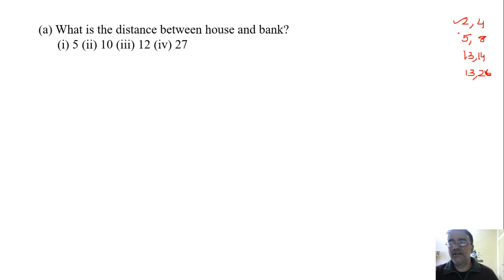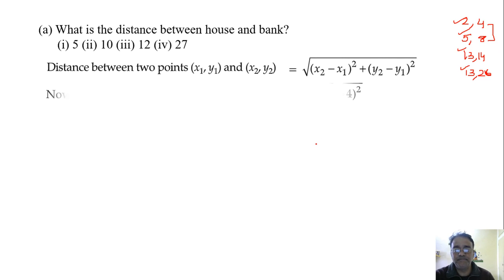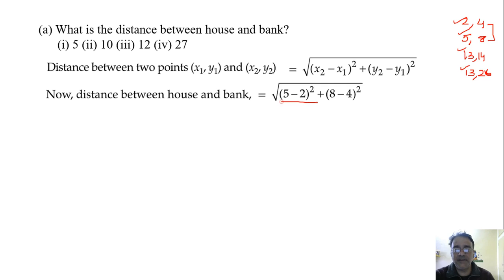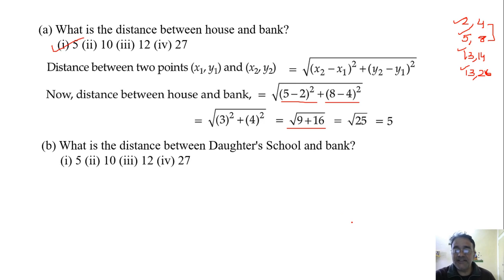The first question: distance between house and bank. We'll use the distance formula: √((5−2)² + (8−4)²). We get 9 here and 16 here, so 9 plus 16 gives 25. The square root of 25 is 5. So the answer is 5 kilometers — first option is correct.